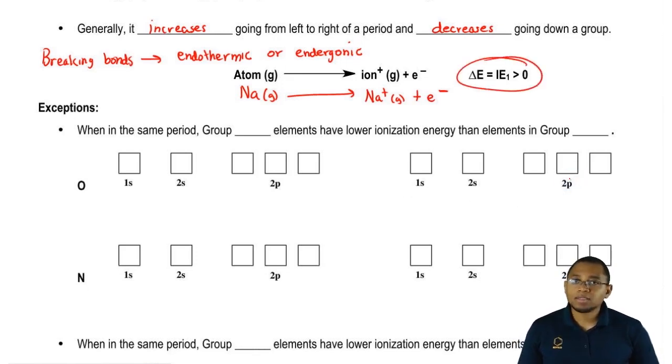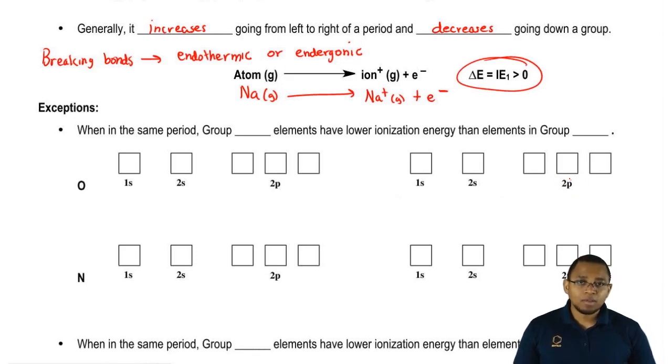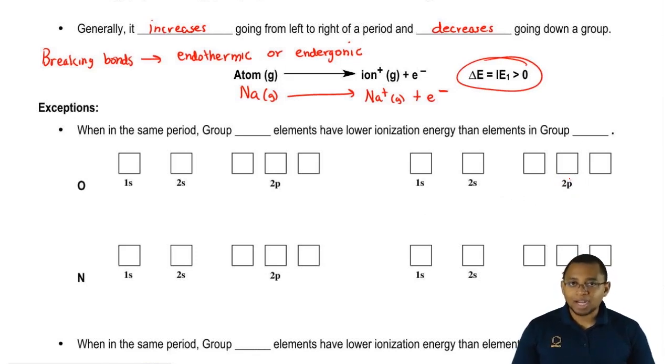When we form bonds, the change in energy will be less than zero. That would be an exothermic or exergonic reaction.